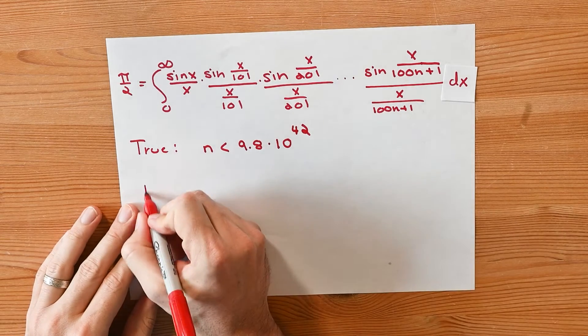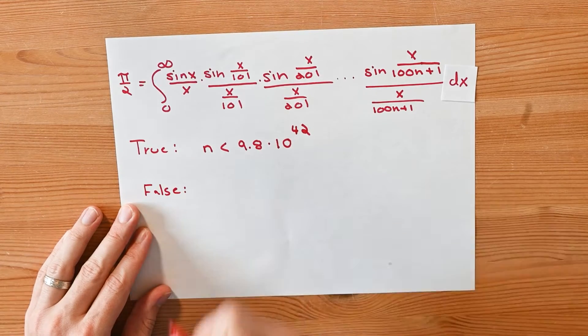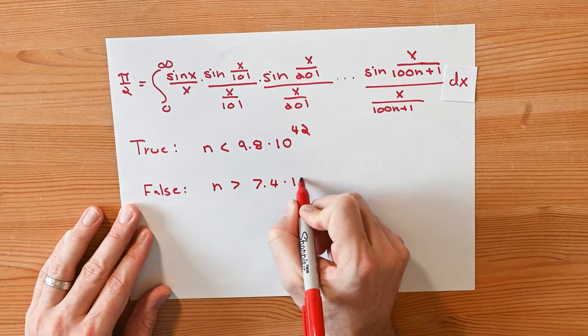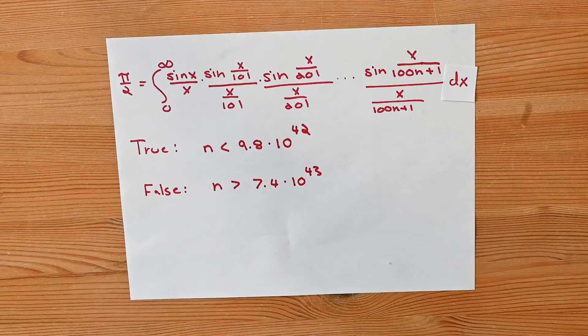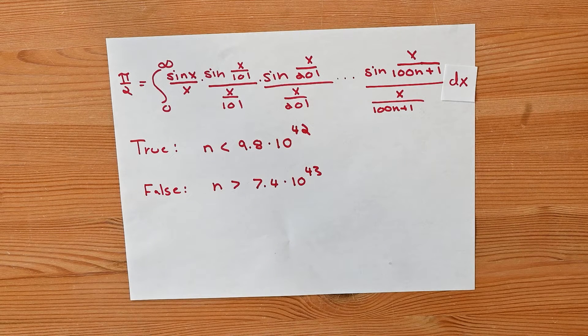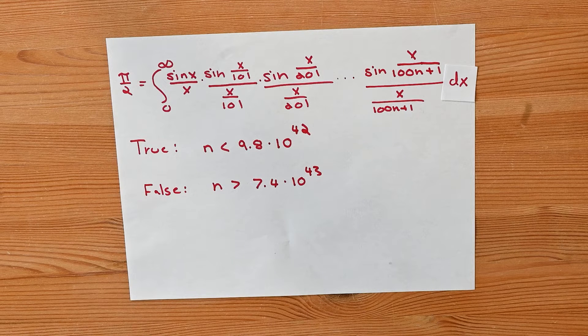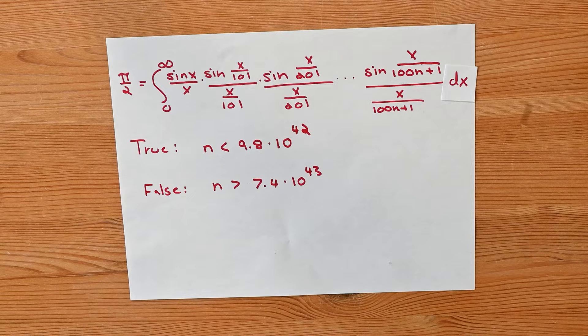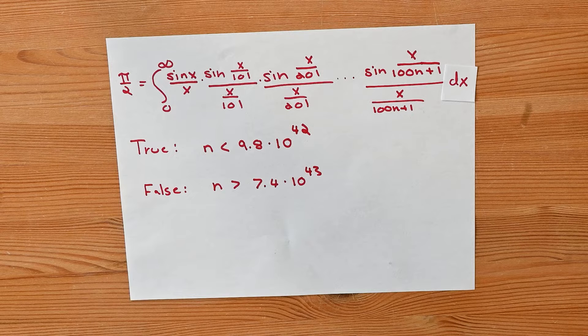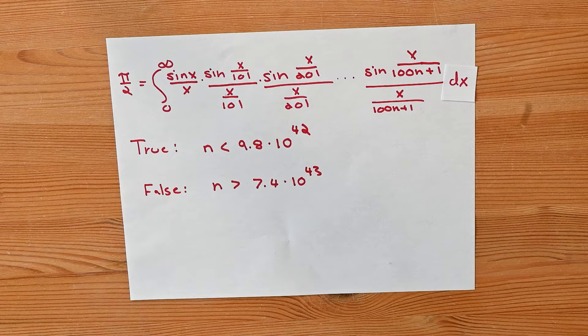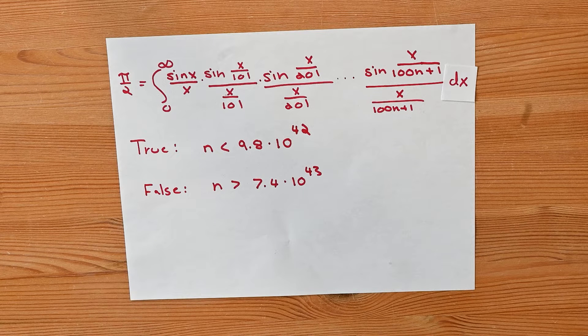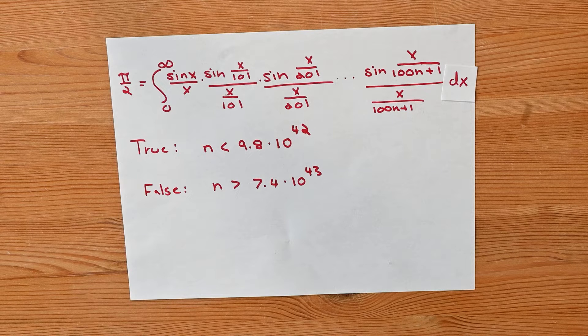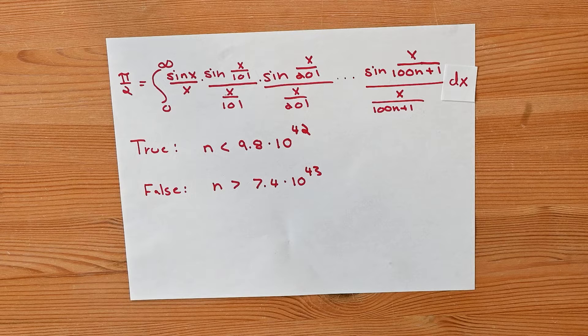But look at this. It's going to become false when n is a number which is bigger than 7.4 times 10 to the 43. And in between these, it sort of wobbles around. So this is a pattern that appears true for an absolutely insanely large value of n, but eventually is false. Eventually, this crazy integral with 10 to the 43 factors in it will not evaluate out equal to pi over 2. These integrals, by the way, are related to Fourier transforms. And the exact argument about why this was true and how an integral like this was constructed to give such an outrageous value, you can see a link in the description that explains all of that. I'm not going to reproduce it here.